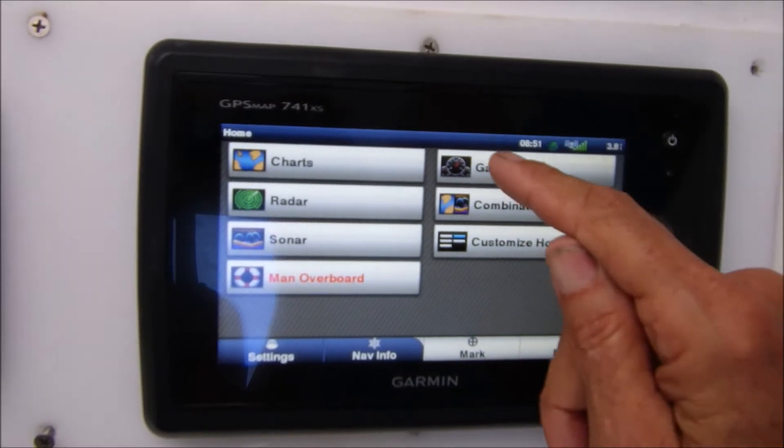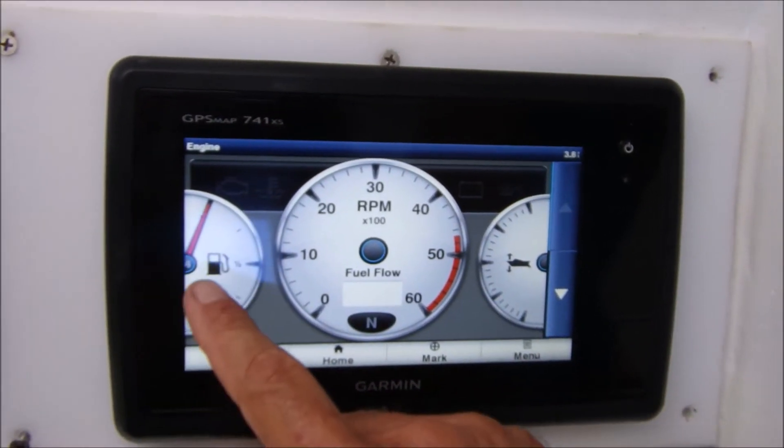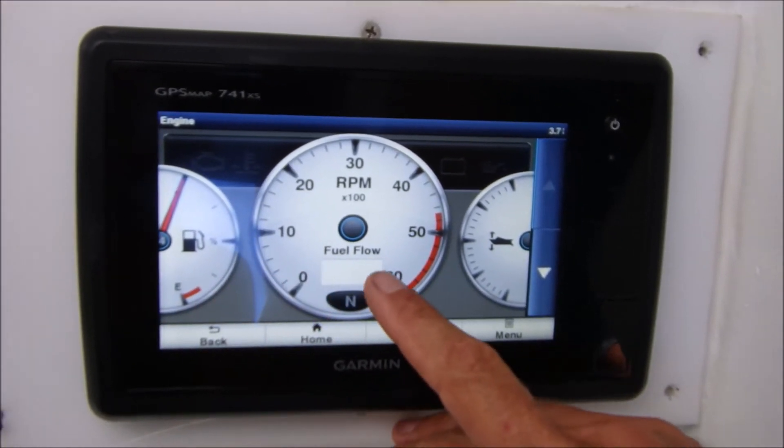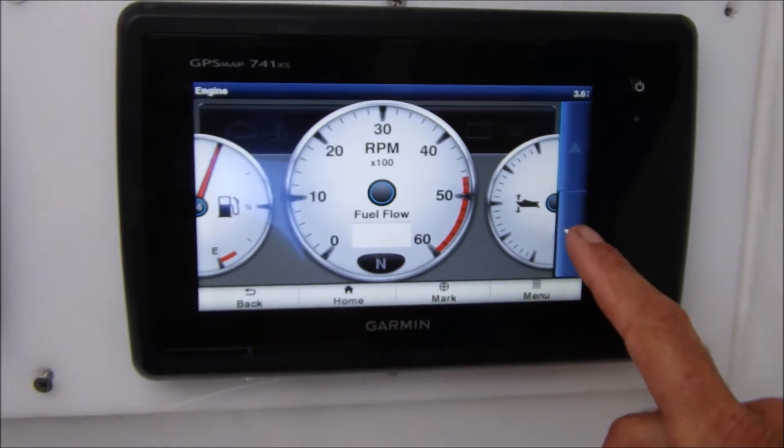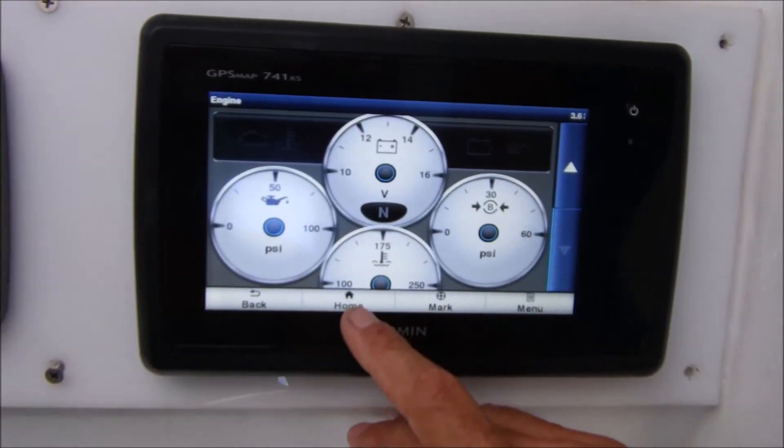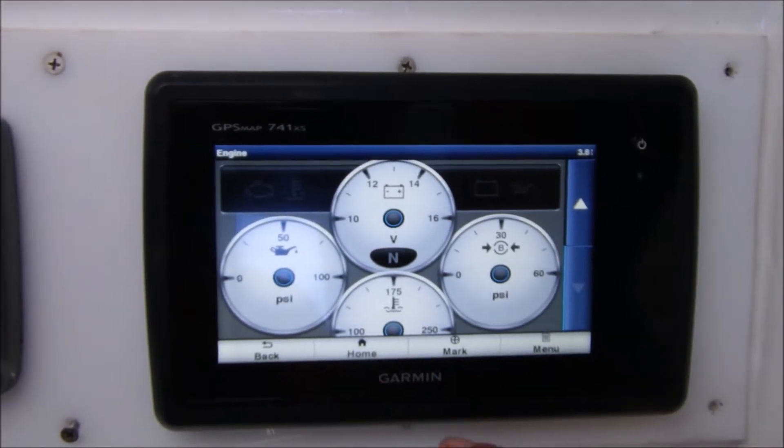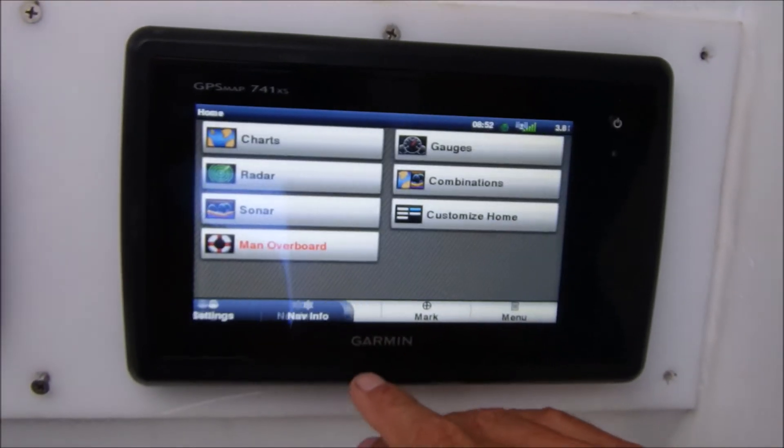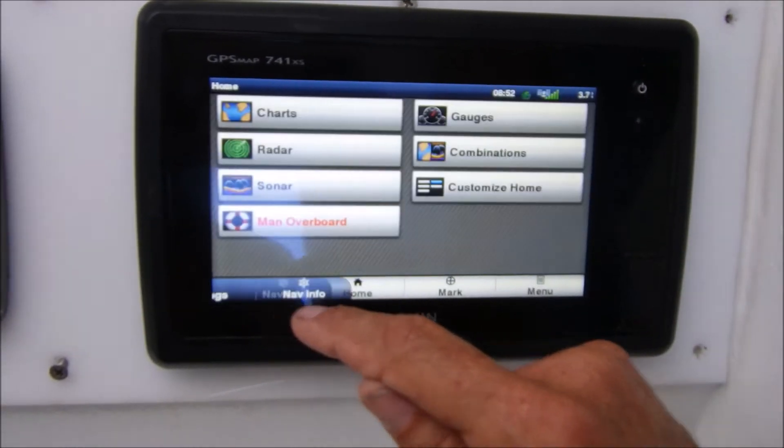I also have in gauges here engine data so I can see the level of the tank that I'm running from, the fuel flow rate, the speed, RPMs, voltage, temperature, boost pressure, etc. And of course we also have radar which I'm sure you're already familiar with.